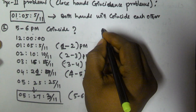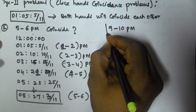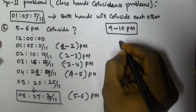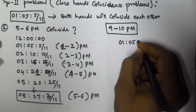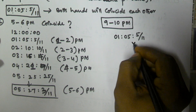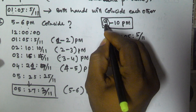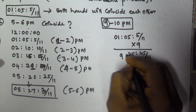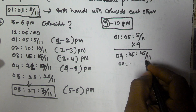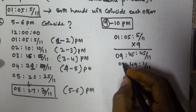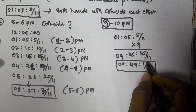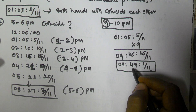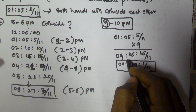Next, let's find the time between 9 to 10 PM when both hands will coincide. We know that after every 1 hour 5 minutes 5/11 seconds both hands coincide, so we simply multiply by 9. 9 × 5 = 45 minutes and 9 × 5/11 = 45/11, which gives 49 minutes 1/11 seconds. So between 9 to 10 PM, at exactly 9 hours 49 minutes 1/11 seconds both hands coincide.